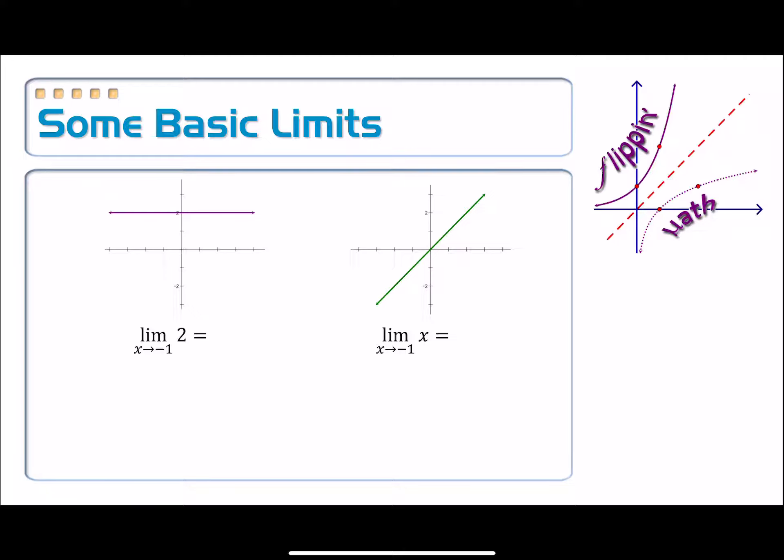So we have, on the left-hand side, what looks like the graph of y equals 2, just a constant function. I'm taking the limit as x approaches negative 1 of 2. Let's look on the graph right there. So at negative 1, it looks from both sides as if our function is approaching 2. And that is, in fact, the value of the limit.